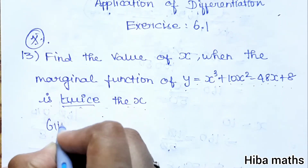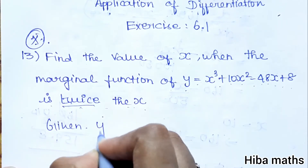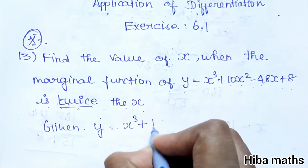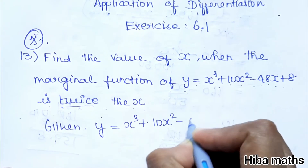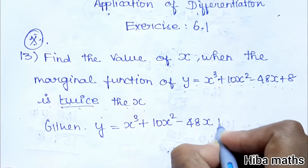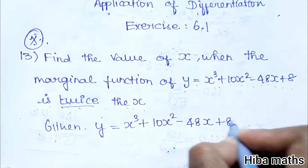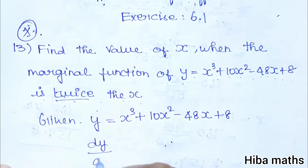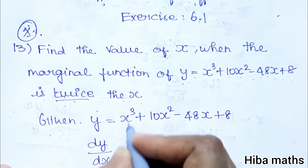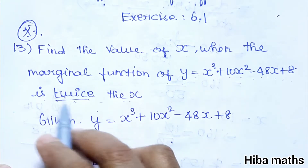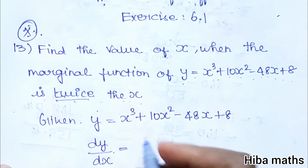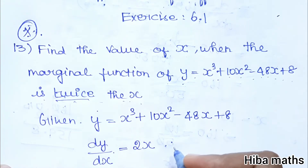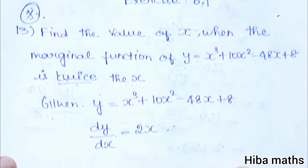So, how do we find the value of X? Y is equal to X cube plus 10X square minus 48X plus 8. We differentiate Y with respect to X and set it equal to 2X. So dY/dX equals 2X is the condition we are working with.